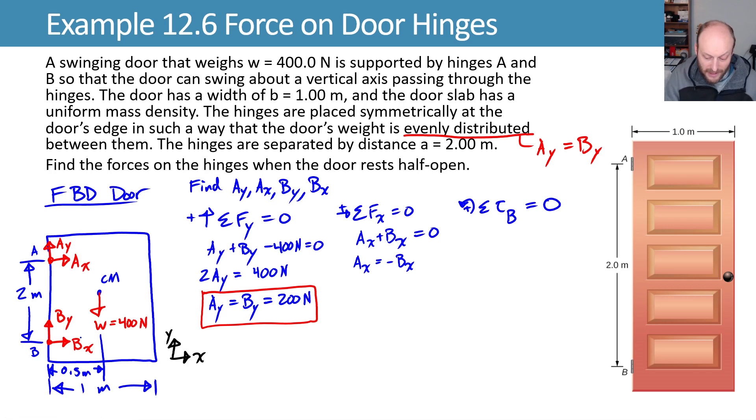And we'll sum our torques. BY doesn't appear, and BX doesn't appear, because they're acting directly on that point, so there's no lever arm. They don't appear in the torque equation. AY, it turns out, doesn't have a lever arm either. Only AX appears, and the weight appears.